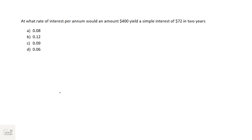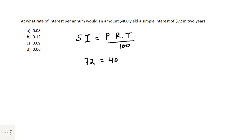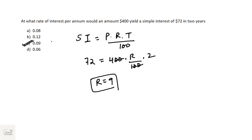A simple interest question: at what rate of interest per annum would an amount of 400 yield simple interest of 72 in two years? Using SI = PRT/100: 72 = 400 × R × 2 / 100, so 72 = 8R, giving R = 9%. Answer: option C, 9%.